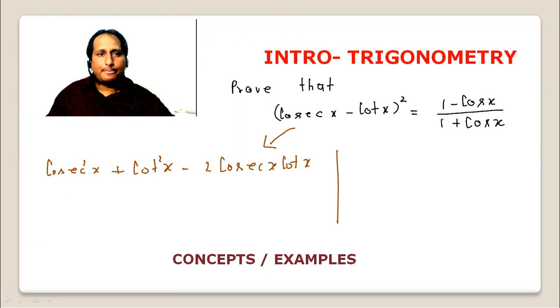If we rearrange and look at (1 - cos x)/(1 + cos x), multiply by (1 - cos x) on top and bottom. We get (1 - cos²x), minus 2 cos x, upon (1 - cos²x), that is sin²x.